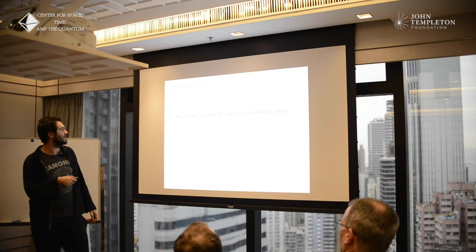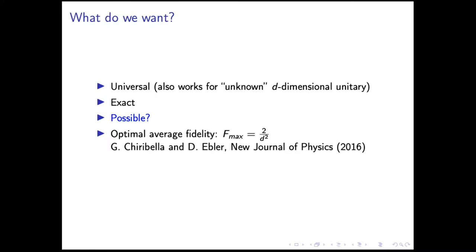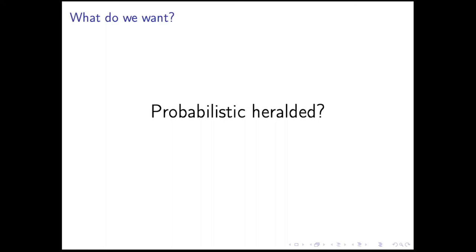We want something universal — that works for any unitary, even unknown. The only thing you know is the dimension. We want to be exact, like perfect complex conjugation. Is such a thing possible? It turns out we were not the first to ask. In work with Giulio and Daniel Abler, they considered this problem and calculated the optimal average fidelity for a deterministic case: 2 over d squared. So it's not possible — fidelity is smaller than 1 for any dimension.